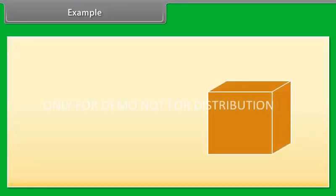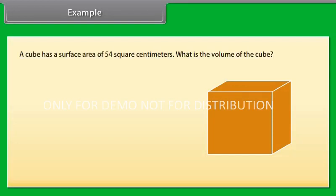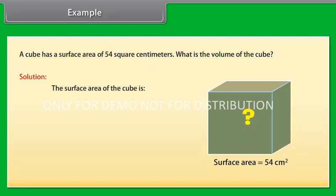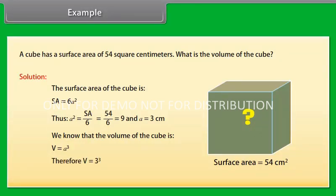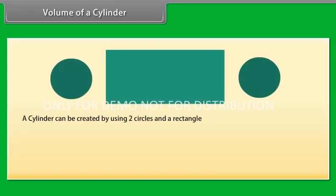Let us now solve an example to find the volume of a cube. A cube has a surface area of 54 cm². What is the volume of the cube? The surface area of a cube is SA = 6A². Thus A² = SA ÷ 6 = 54 ÷ 6 = 9, and A = 3 cm. We know that the volume of a cube is V = A³. Therefore V = 3³, or V = 27 cm³.